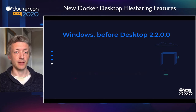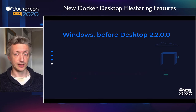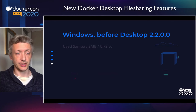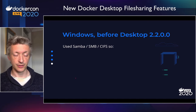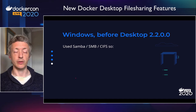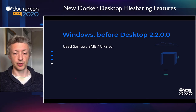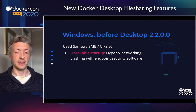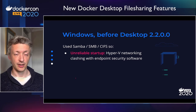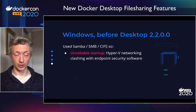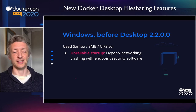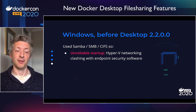I'll start with Windows and describe what we were doing before a fairly recent desktop build, 2200. We used to use SMB, or CIFS — we would share the drives on the host and mount them in the Linux VM where Docker's running. And there were lots of problems caused by this. The Docker Desktop application itself sometimes wouldn't start, because when you try to start the VM, the VM has a network adapter which it needs to talk to the host for file sharing, and this adapter would be blocked by endpoint security software that some people had, which is a bit of a blocker.